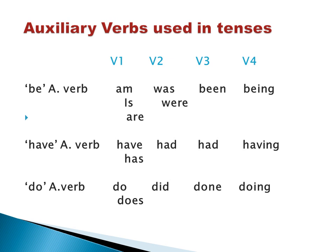Moving on to the have auxiliary verb. Present tense: have, has — once again to facilitate the person of the subject. Past tense: had. Past participle: had. Present participle: having. For the do auxiliary verb, the V1 present tense forms are do, does. Past tense: did. Past participle: done. Present participle: doing.